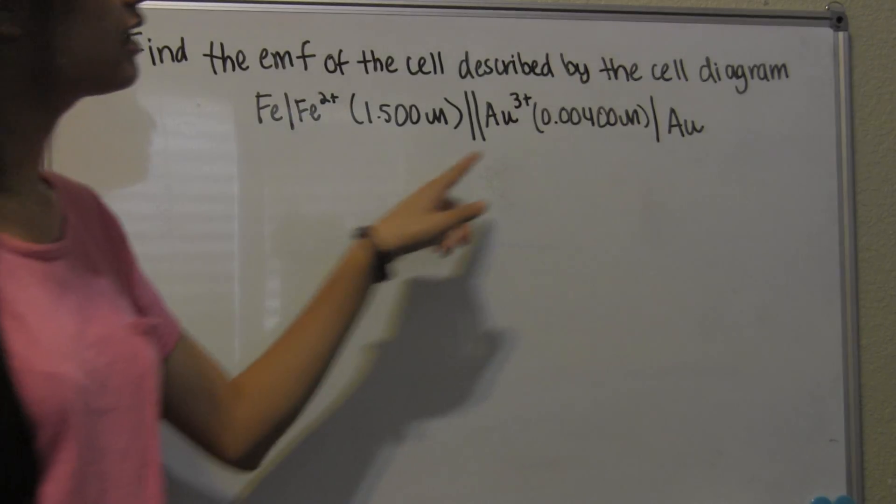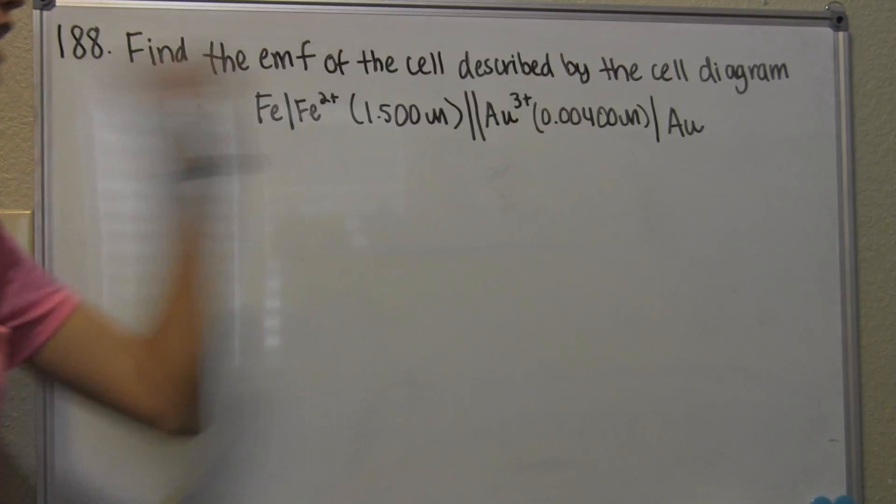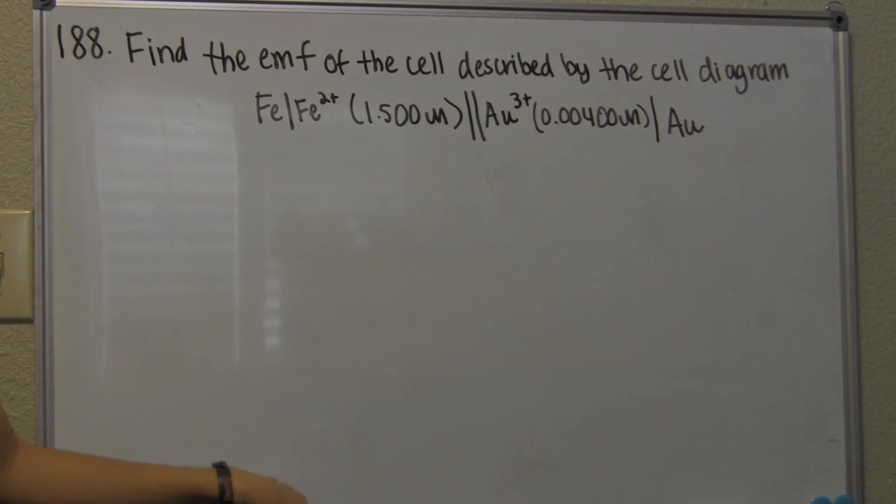Fe, Fe2+, Au, Au3+, and Au. This is number 188 in the problem set, just for reference, so that you all know.